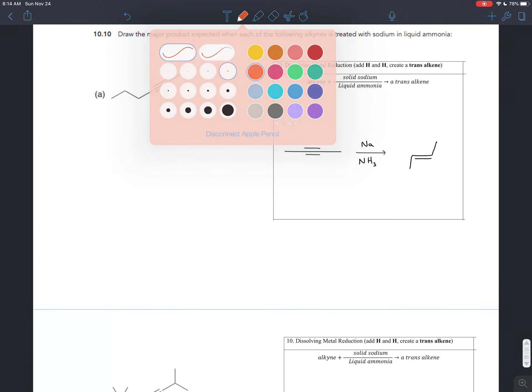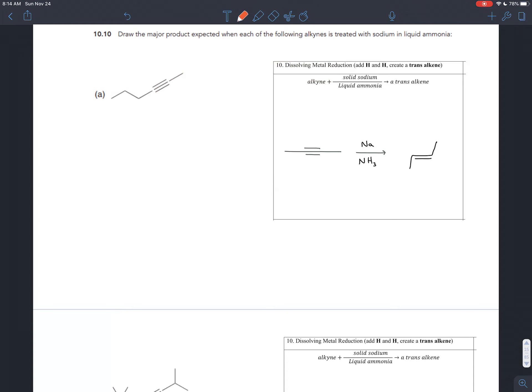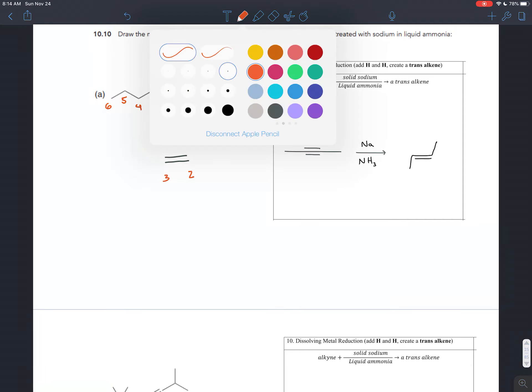So one thing you might do, just to help keep track of stuff, is to number the carbons. Now you can number them however you want. This is not numbering them to name it. It's just numbering it to keep track of stuff. And instead of the triple bond, you could make a double bond. And if it helps, you can carry those numbers over. That will still be between carbons 2 and 3.